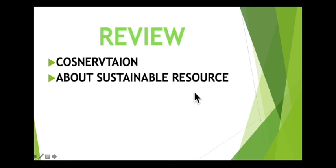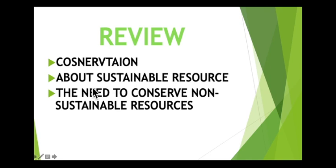We discussed sustainable resources — those resources which do not run out. For example, fish in the sea could be a sustainable resource, as long as we do not take so many that their population falls to dangerously low levels. Another example is wood for fuel, which could be a sustainable resource if we replant trees to replace the ones we cut down. Fossil fuels are a good example of non-sustainable resources, because they were formed millions of years ago from dead plants and animals.